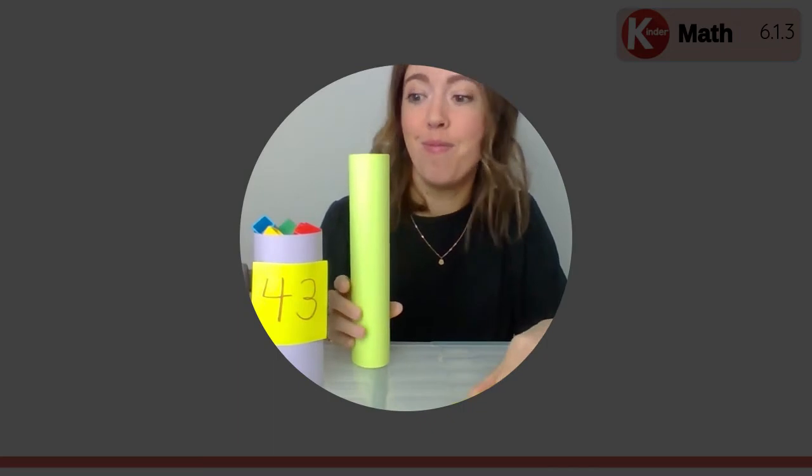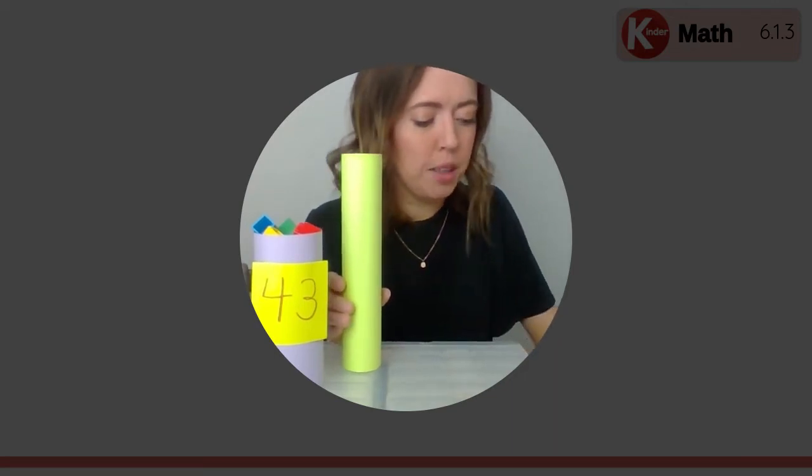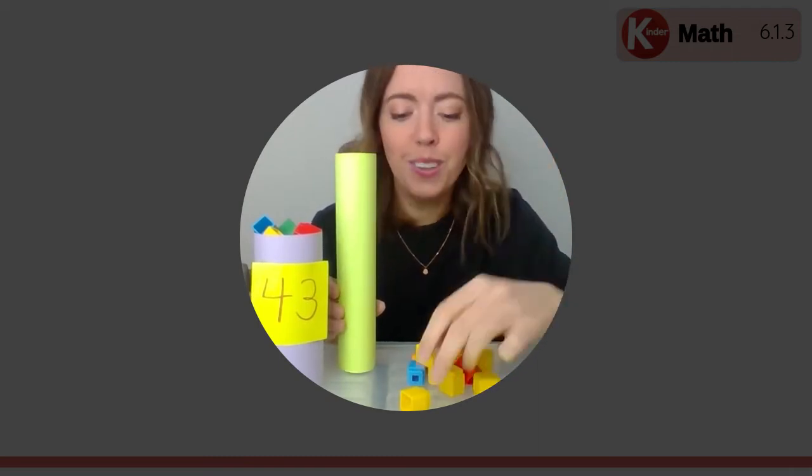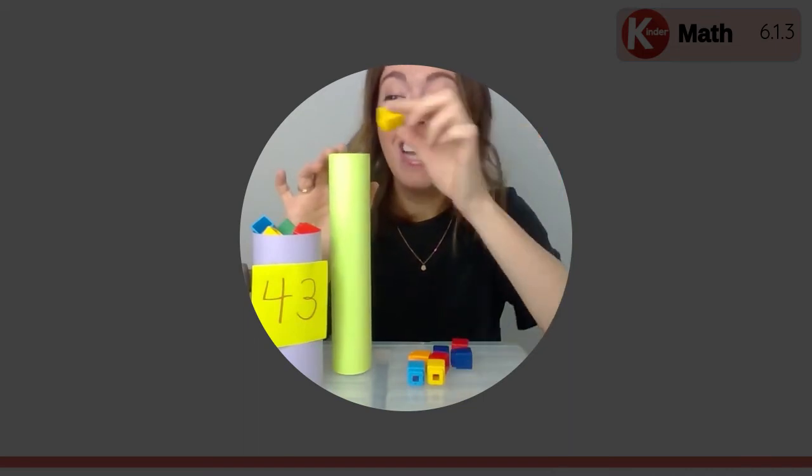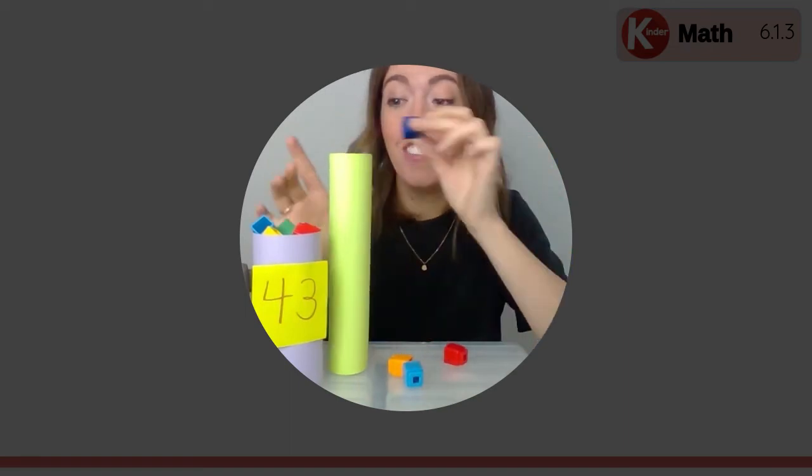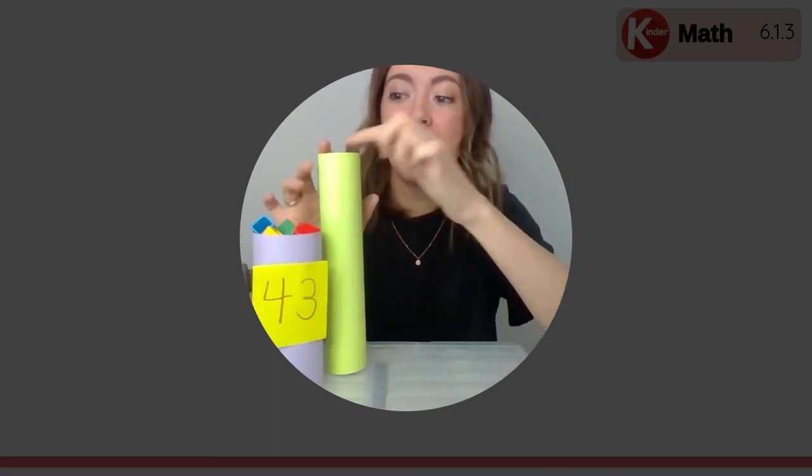Forty-three, wow, that was a lot more cubes than I was thinking. 43 in this cylinder. Let's do our tall green cylinder. Do you think this is going to be more than 43 or less? Let's find out. Let me get some cubes. Okay, let's count together: one, two, three, four, five, six, seven, eight, nine, ten, eleven, twelve, thirteen.